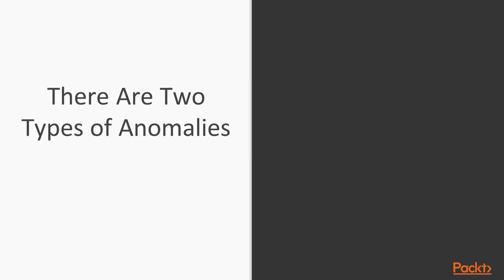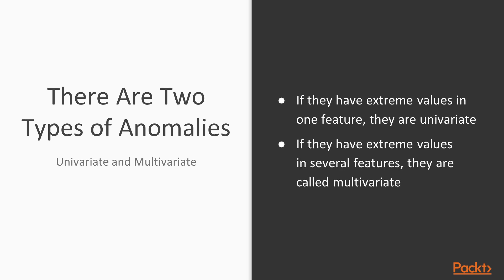There are two types of anomalies, univariate and multivariate. If the anomalies have extreme values in only one direction or one feature, they are considered as univariate. But if they have extreme values in several features, they are called multivariate.